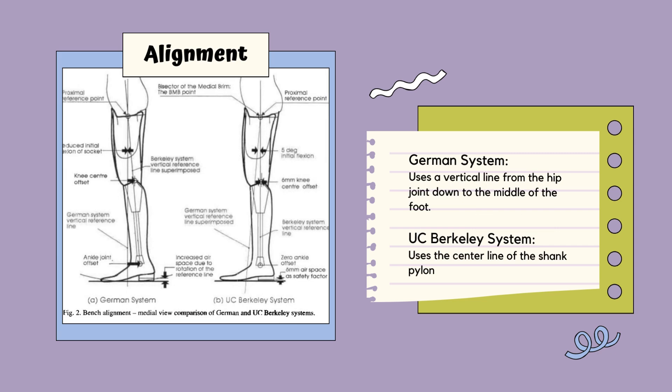Let's now talk about alignment. When setting up a prosthetic leg, professionals use vertical reference lines to ensure stability when weight is applied. There are two systems: the German system and the UC Berkeley system. The German system uses a vertical line from the hip joint down to the middle of the foot. The Berkeley system uses the center line of the shank pylon — the part of the prosthetic leg between the knee and the foot. The UC Berkeley system is more popular because it is simpler and works well with different prosthetic designs.